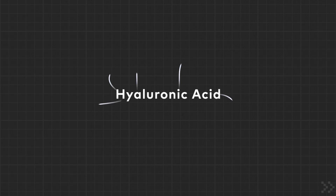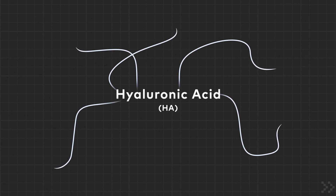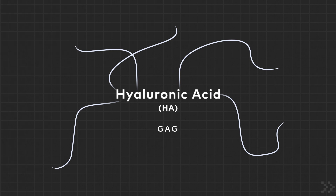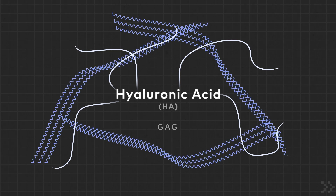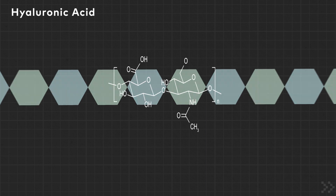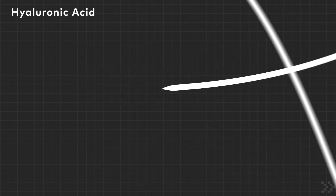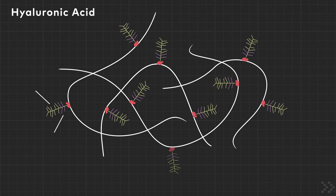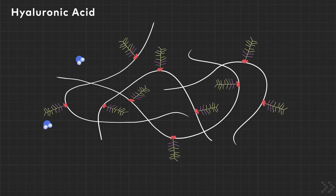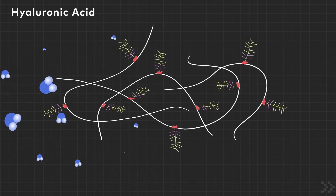Hyaluronic acid, sometimes referred to as hyaluronin or HA, is the most abundant glycosaminoglycan in the body and is a major extracellular matrix component of many tissues. It is a negatively charged linear polysaccharide consisting of D-glucuronic acid and N-acetylglucosamine linked by glycosidic bonds. Hyaluronic acid forms branching chains with proteoglycans and other glycosaminoglycans like chondroitin sulfate and keratin sulfate. These protein and polysaccharide networks contribute to extracellular matrix structure and hydrodynamics in many types of connective tissue.